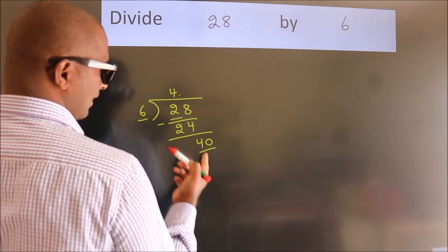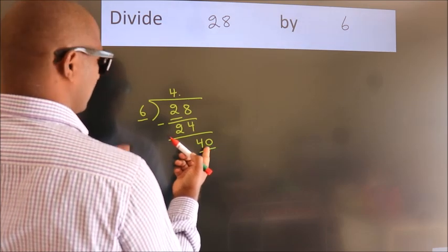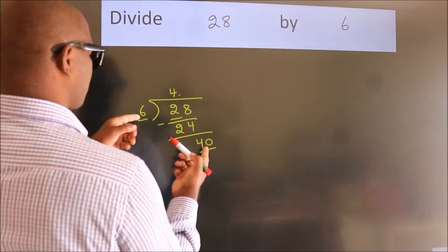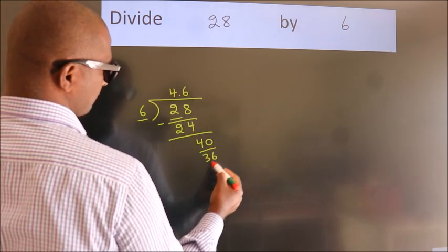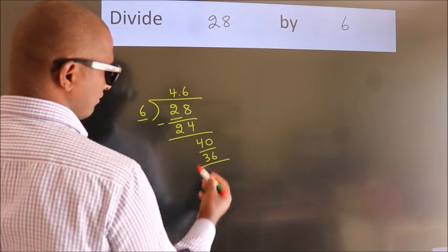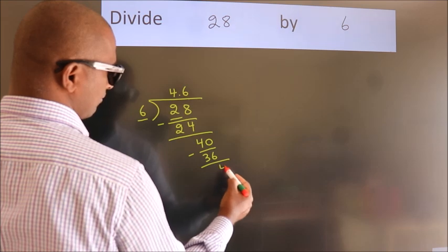So 40. A number close to 40 in the 6 table is 6 six is 36. Now we subtract. We get 4.